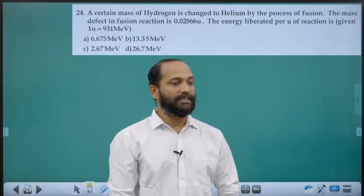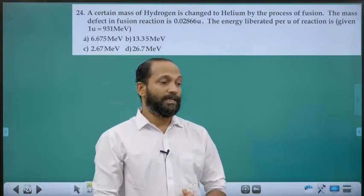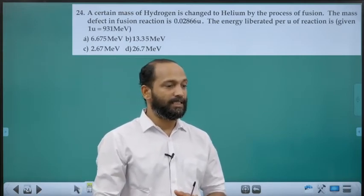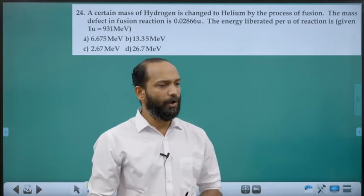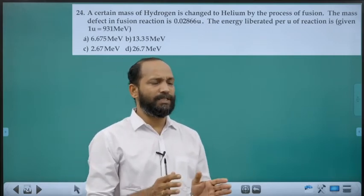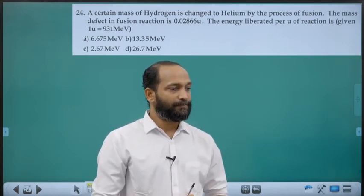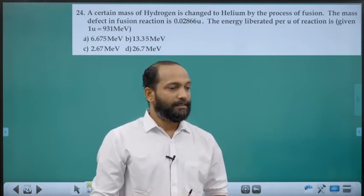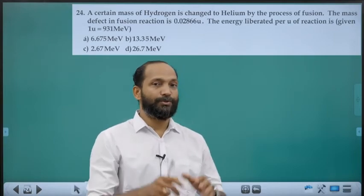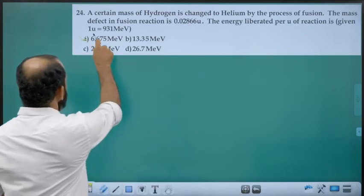Twenty-fourth question: Certain mass of hydrogen is fused into helium. Mass defect is given in AMU. Energy liberated per AMU = mass defect × 931 MeV. Since helium has mass number 4, divide by 4. Answer is option A.